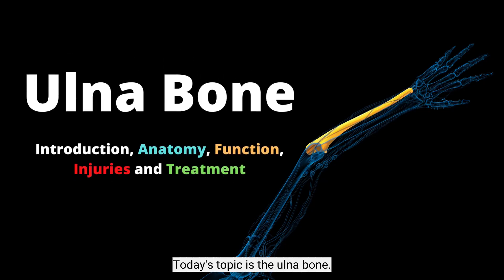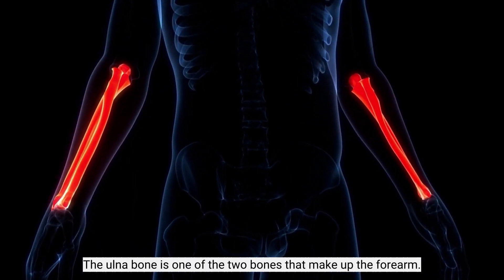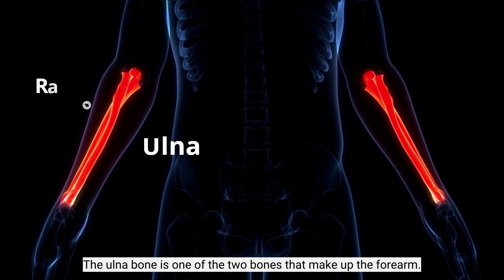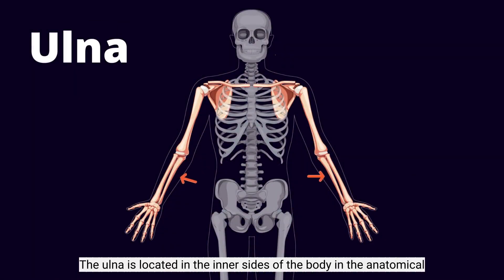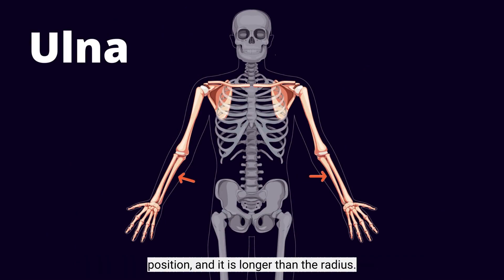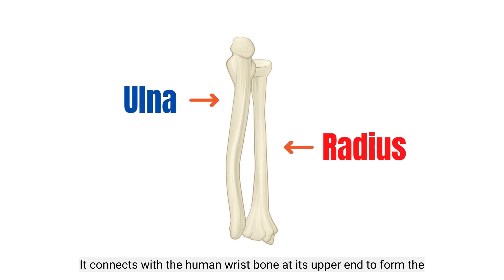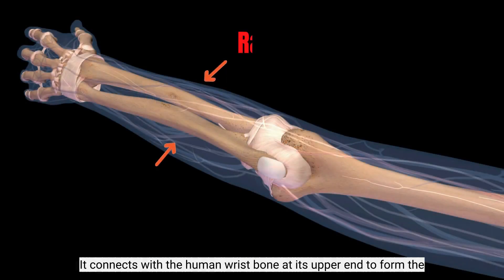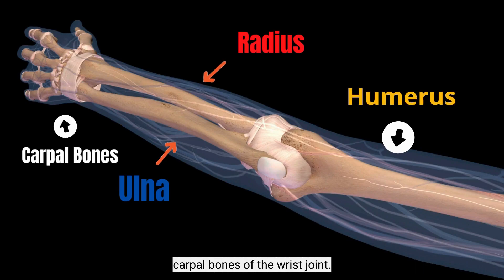Today's topic is the ulna bone. The ulna bone is one of the two bones that make up the forearm; the other is the radius. The ulna is located on the inner side of the body in the anatomical position and it is longer than the radius. It connects with the humerus bone at its upper end to form the elbow joint, and at its lower end it connects with the radius and the carpal bones of the wrist joint.